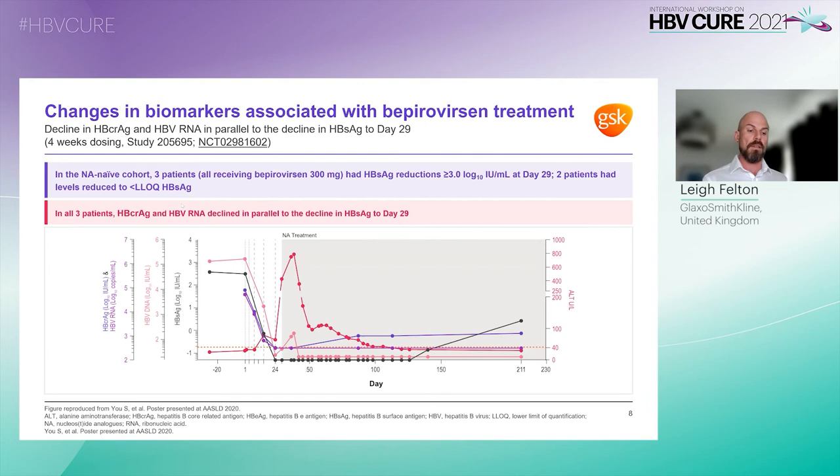Moving on to new biomarker data. GSK presented new data on HBcrAg and HBV-RNA at AASLD from their phase 2a study, which indicated that bepirovirsen was able to suppress S antigen production from both cccDNA and integrated HBV DNA. HBV-RNA and HBcrAg are surrogate markers for transcriptionally active cccDNA.